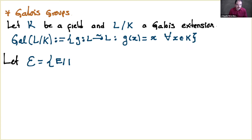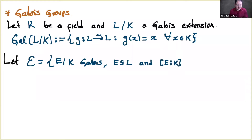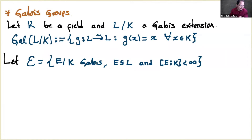Since L/K is a Galois extension, we call this the Galois group. We can consider the set A of all finite Galois extensions of K inside L. This will be our index set for constructing a projective system. You can verify that it works as a directed set — this is an exercise in Galois theory.